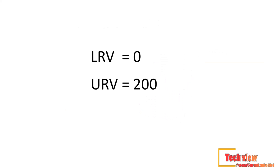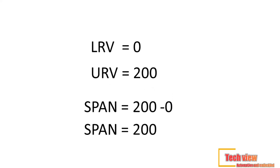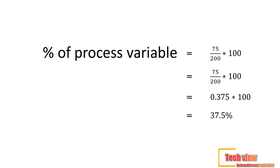For the above problem we have to find the percentage of the process variable. Our LRV equals 0 bar and URV equals 200 bar. The span is URV minus LRV, which equals 200 minus 0, equals 200. The current value is 75. The percentage of process variable equals current value divided by span, times 100. So 75 divided by 200 times 100 equals 0.375 times 100, which gives us 37.5%.